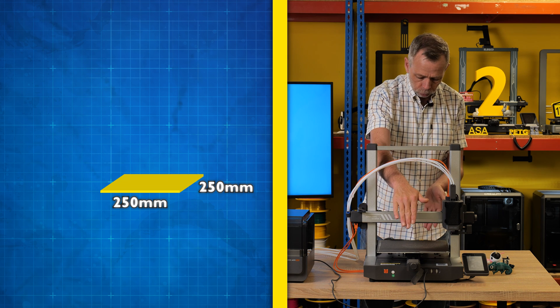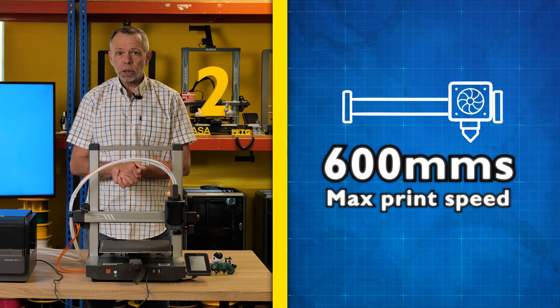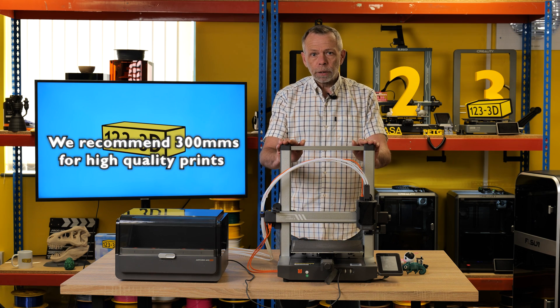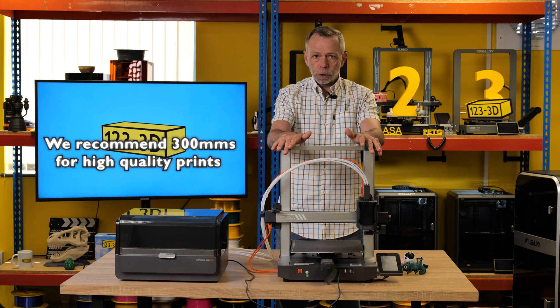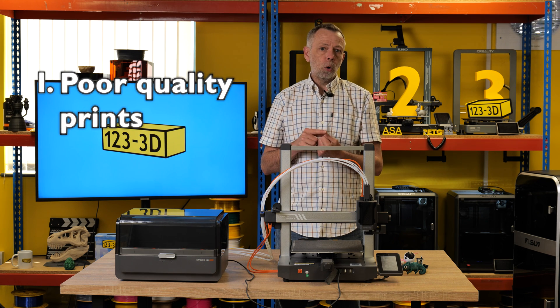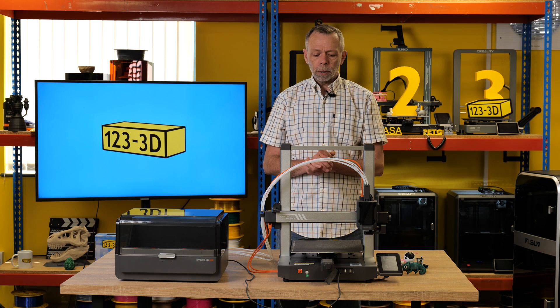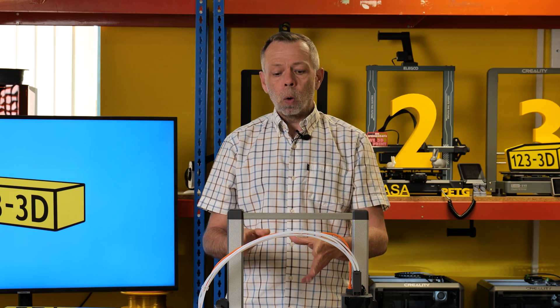So, the build volume for this machine is 250mm by 250mm by 260mm high. Maximum print speed is 600mm a second. As we'll say with all machines, that is the maximum print speed that the machine is capable of. However, we don't recommend that you subject the machine to that sort of speed for prolonged periods of time. One, you'll get poor quality prints. Two, you're going to wear components relatively quickly. Ultimately, that sort of speed is literally for a quick one-off prototype.